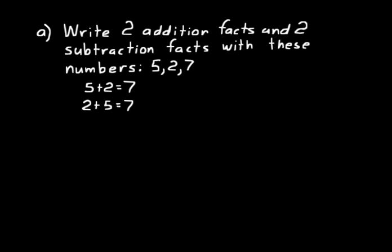For two subtraction facts, addition and subtraction are inverse operations. We could do seven minus two equals five, and also seven minus five equals two. Notice: the sum of the addition problems was seven. We can undo that addition by subtracting one of the addends. Subtraction undoes addition — that's what inverse operations do.